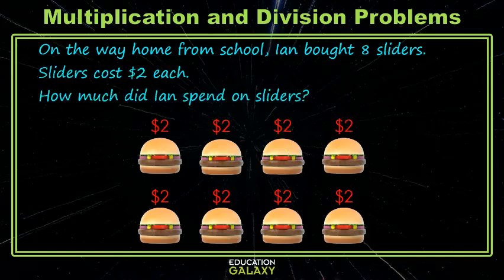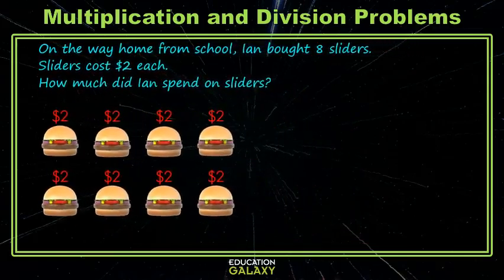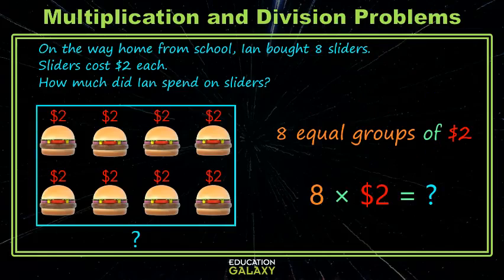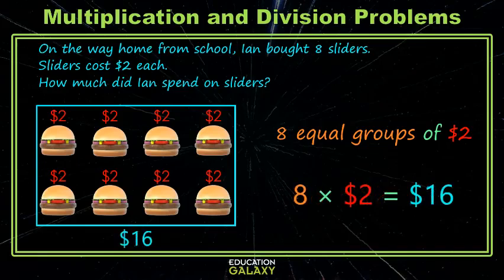So you could count, or you could skip count two, four, six, eight, but we're not always going to have these nice easy numbers to work with. We need to understand what operation goes with this type of problem. What we have here is equal groups — we have eight equal groups of two. When we have equal size groups and we're looking for a total, we use multiplication. Now we're just solving eight times two, which is 16.